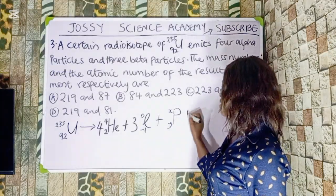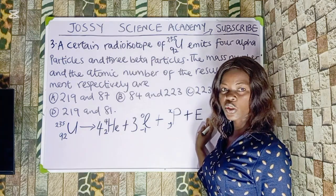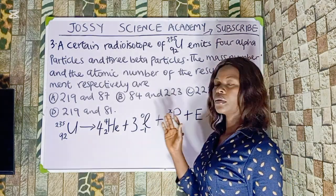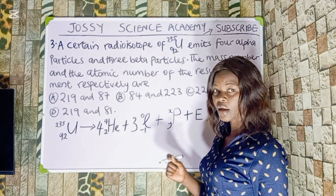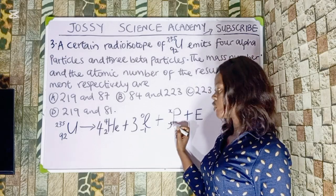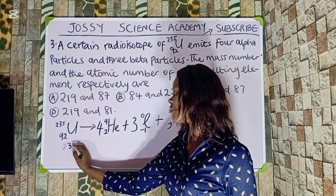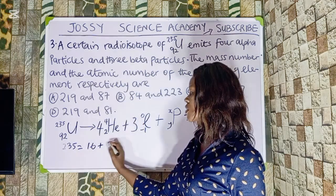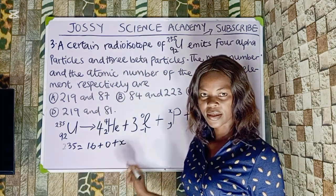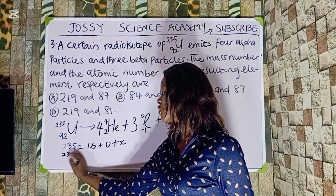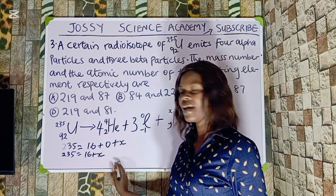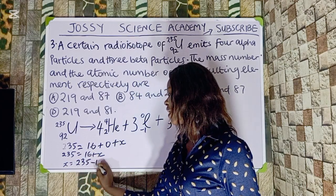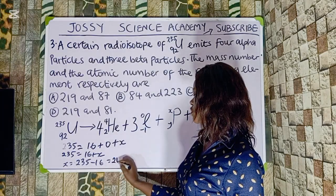We ensure the mass numbers of the reactants equal the mass numbers of the products. So: 235 equals 4 times 4 (which is 16) plus 3 times 0 (which is 0) plus X. Therefore 235 equals 16 plus X, so X equals 235 minus 16, giving X equals 219. That is the mass number.